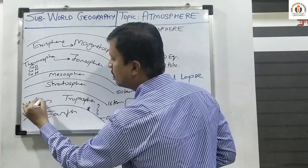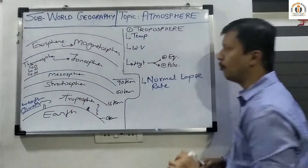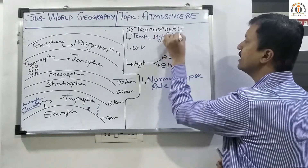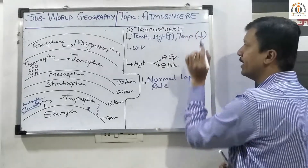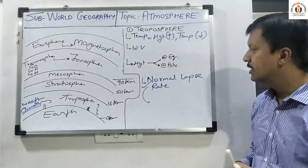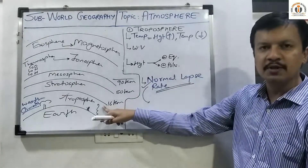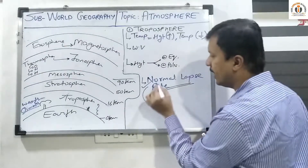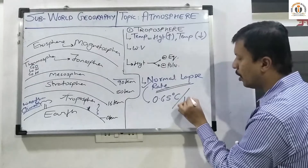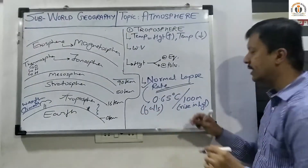Many weather phenomena as well as climatic conditions in different regions of the earth are basically a product of the troposphere. The first property with respect to temperature: in troposphere, as height increases, the temperature keeps on going down. This phenomenon is termed the normal lapse rate. The fall in temperature is 0.65 degrees centigrade per 100 meter rise in height.